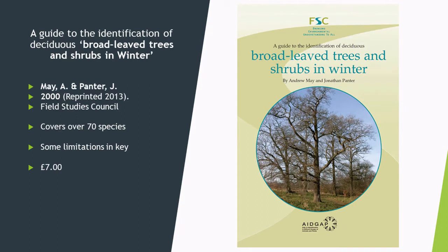In 2013, May and Pant produced a guide to the identification of deciduous broadleaf trees and shrubs in winter, since updated. It covers around 70 species and there are some limitations — for instance it doesn't separate bird cherry and wild cherry. It does have some issues with the keys around couplet 40. But for a beginner it is an incredibly friendly introduction. Its keys are pictorial as well as written, and I'd recommend it for the absolute beginner and intermediate botanist alike. It's what many of us who learnt winter tree ID learnt from.